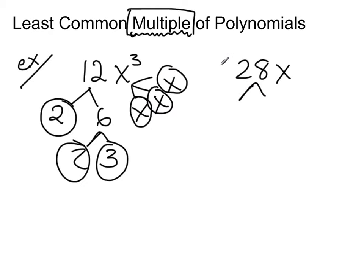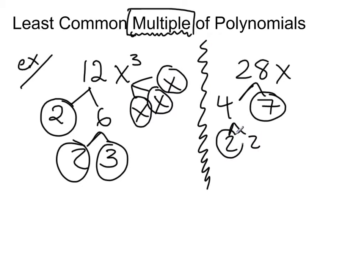28, we're going to do the same story and if you need to, break up your page so you visualize these as two different things. 4 can go into 28, 7 times, 7 is prime. 4 breaks down to 2 and 2 and then now we have x which is just by itself.